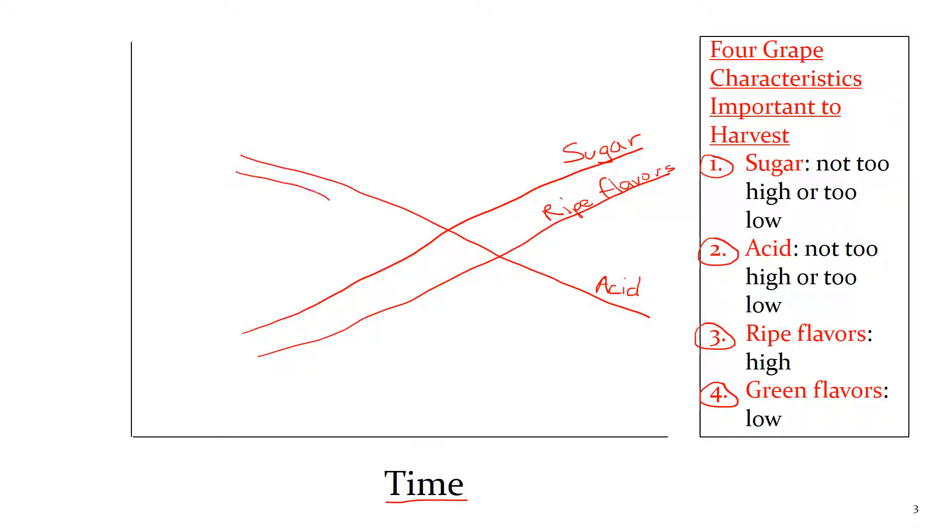At the same time the acid is declining, the green flavors are also declining. And so you want those again to come to a level that's perfect. So the winemaker is going to make a decision somewhere during harvest. They might have a harvest window of time in which the sugar is not too high and not too low, the acid's not too high not too low, ripe flavors are where you want them, green flavors are where you want them. And that is where you're going to want to harvest. So this range here, there's some period of time in here that's the sweet spot in which the winemaker is going to say it is time to harvest the grapes.